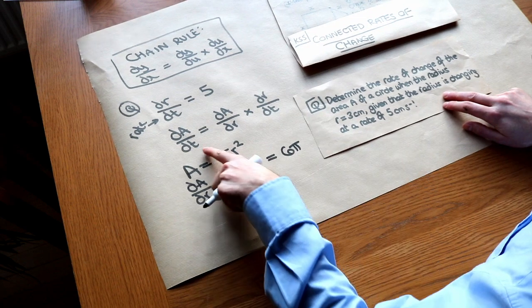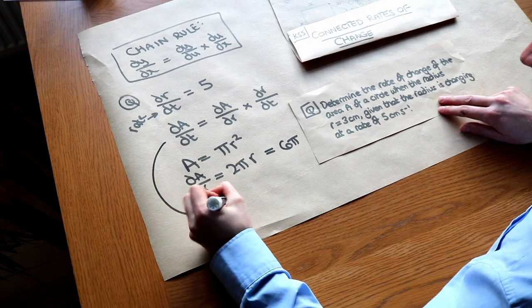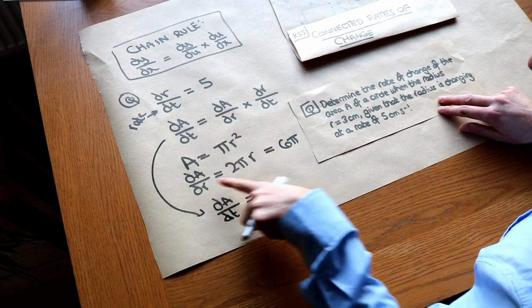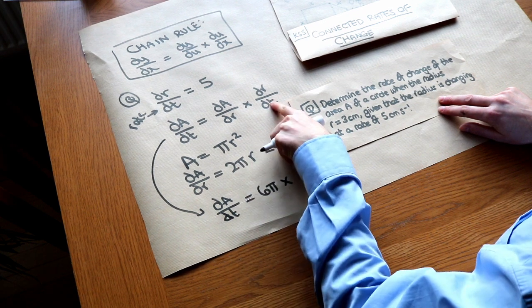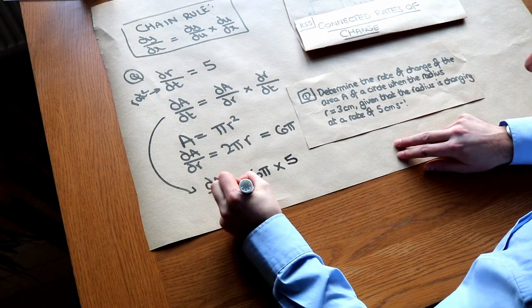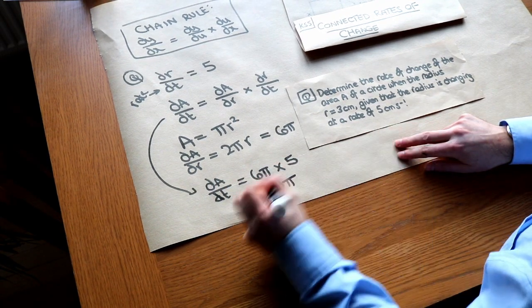Now we have everything we need to find dA over dt. So dA over dt is equal to dA over dr, which is 6 pi, times by dr over dt, which we're told in the question was 5. And then 6 pi times 5 is 30 pi. That is the final answer.